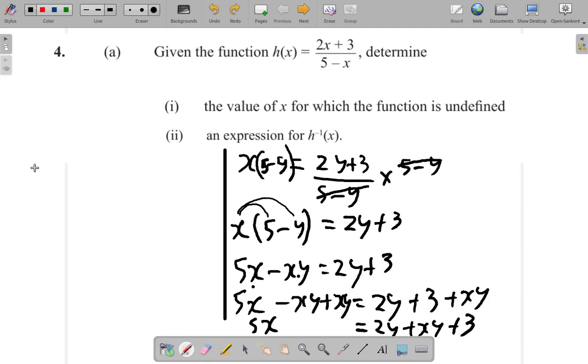So I want y's alone on the right. I have a 3 here. I don't want any x or number, only y's. So I get rid of the 3. So 5x equals 2y plus xy, which is here, plus the 3.